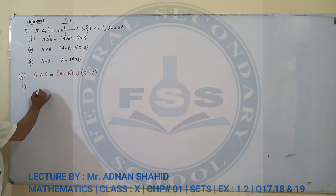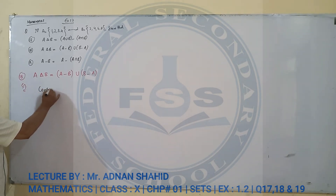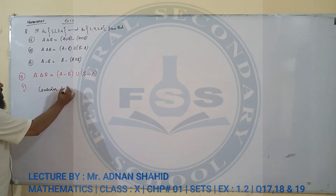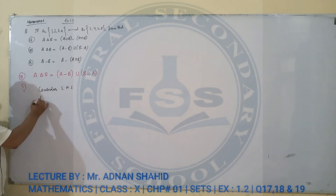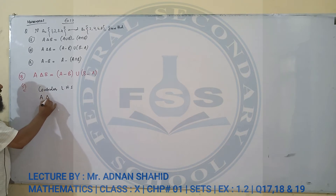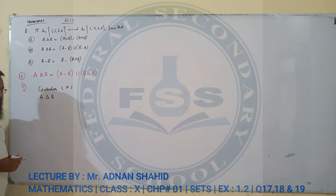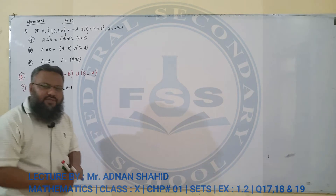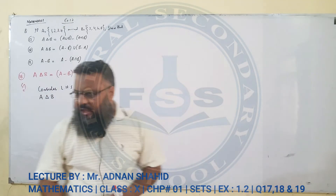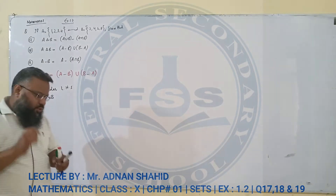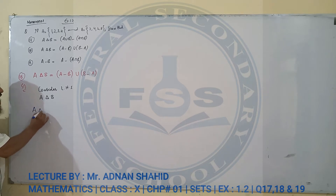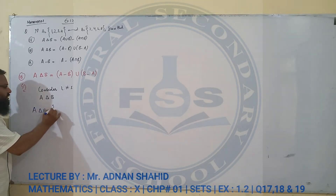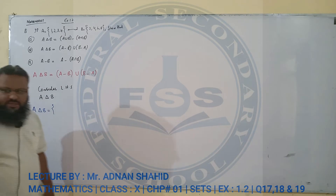Left hand side को solve करने जाते हैं — consider LHS. LHS यानी left hand side. तो left hand side को हमने लिखा A symmetric difference B. A symmetric difference B कैसे निकालेंगे जब prove that या show that का सवाल करने जा रहे हैं? इसको निकालने के लिए मैंने आपको एक तरीका बताया था जब मैं set operation समझा रहा था।